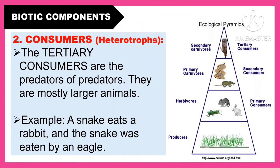The tertiary consumers are the predators of predators. They are mostly larger animals. For example, a snake eats a rabbit, and the snake was eaten by an eagle.